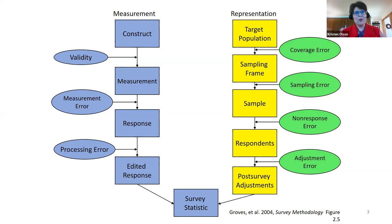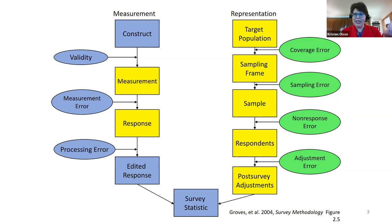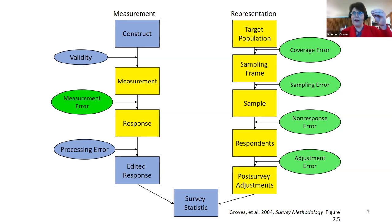From a total survey error perspective, all the places where things can go wrong affect the representation side. We may have errors in evaluating household composition leading to a mismatch between the sampling frame and our target population. Something happening in the selection of people within the household leads to errors between the sample selected and the list from the sampled household. Misreported household composition also means our weights based on random selection within the household can go awry — leading to all the representation-side errors.